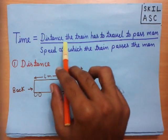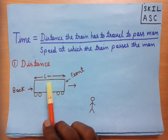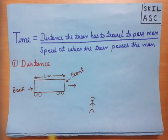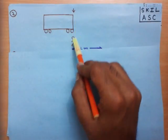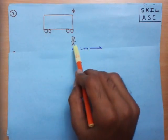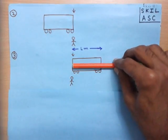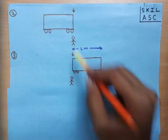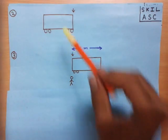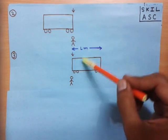First, we see how to find the distance the train has to travel to pass the man. Suppose a man is standing here — this man is not moving at all. The train of length L meters is moving towards the man, where this is the front of the train and this is the back. When the front of the train comes in line with the man, the train starts to pass him. It keeps passing until the back of the train comes in line with the man — at that position, the train has completely passed the man. Between these two positions, the train passes the man, so the distance the train travels equals the distance between these two positions.